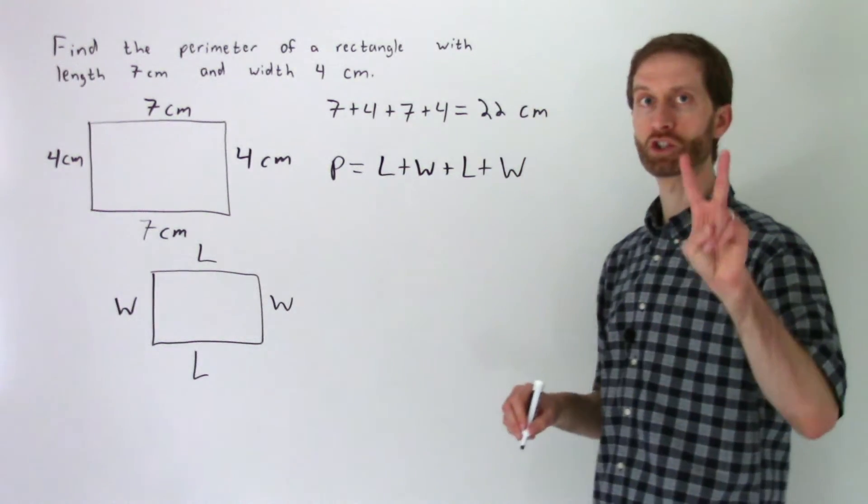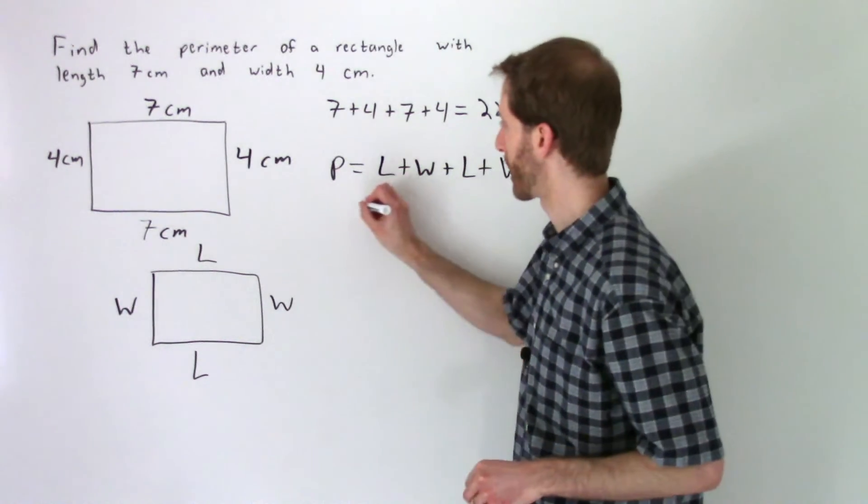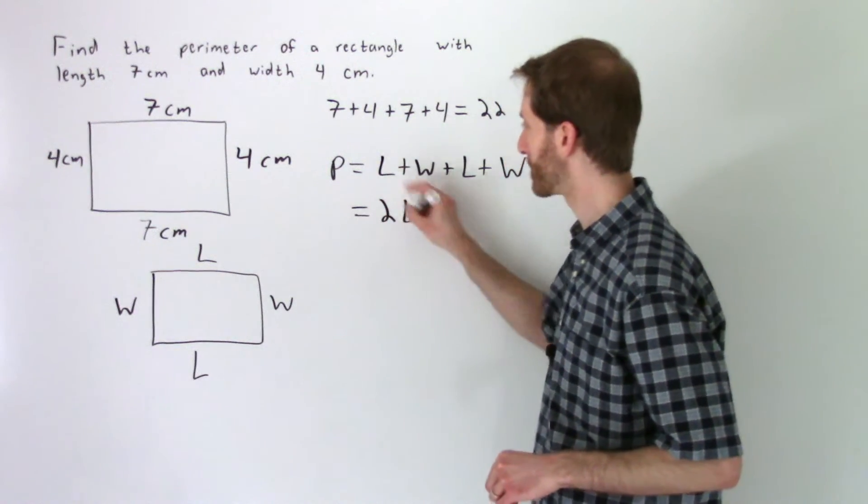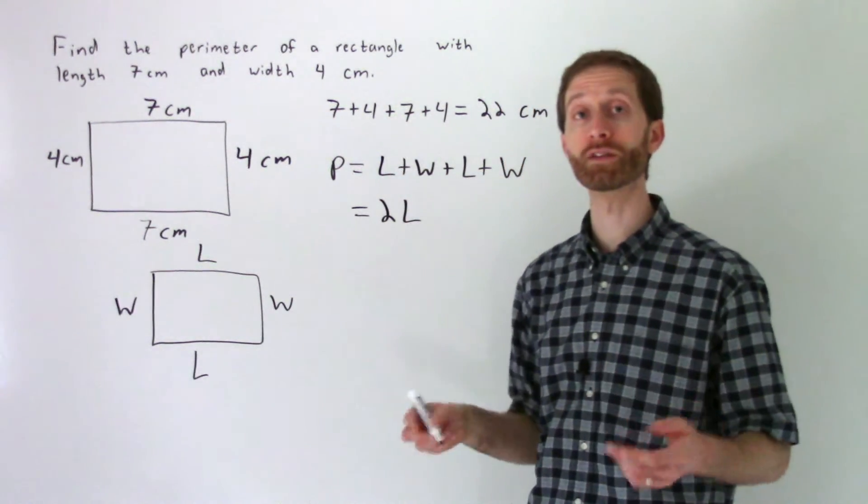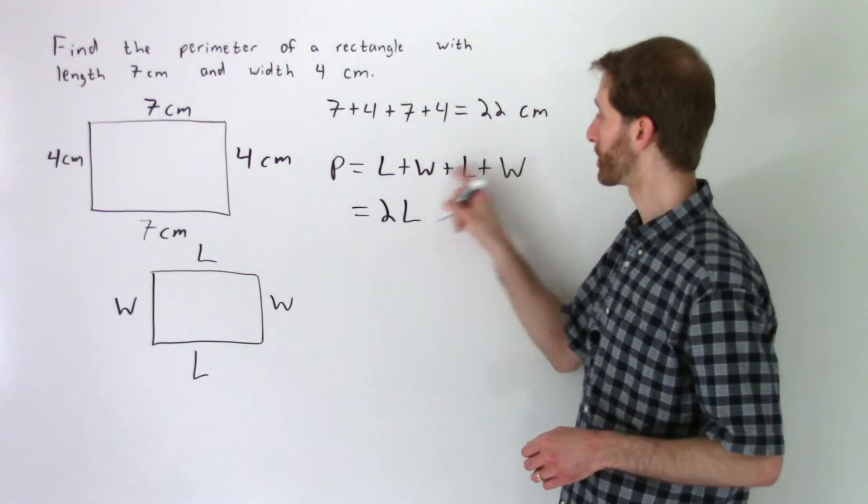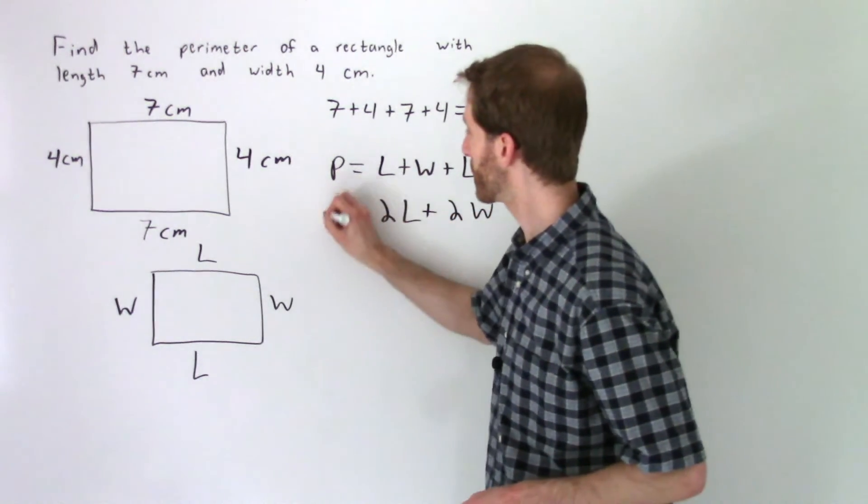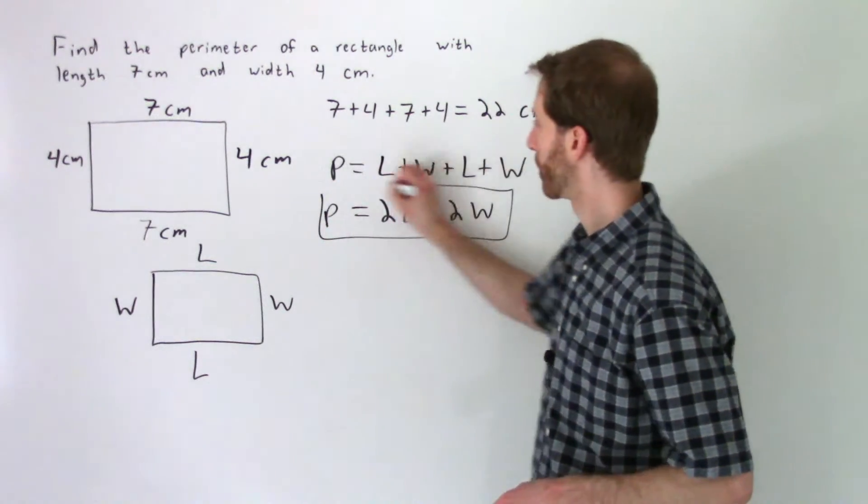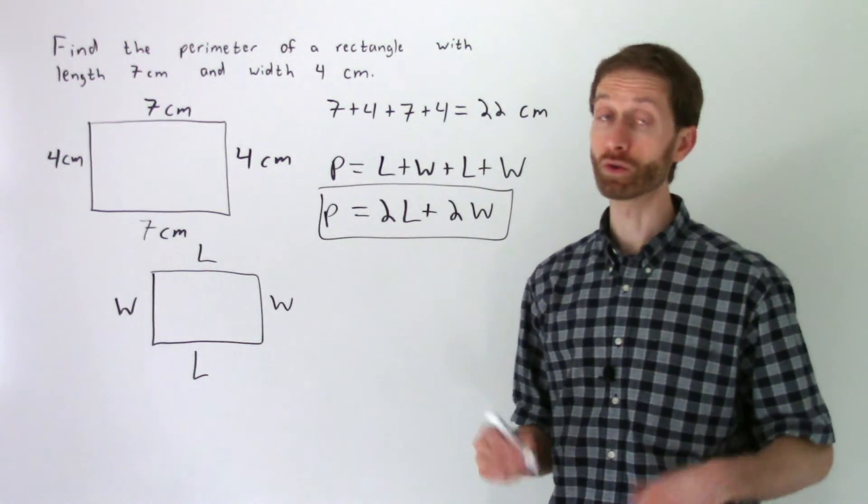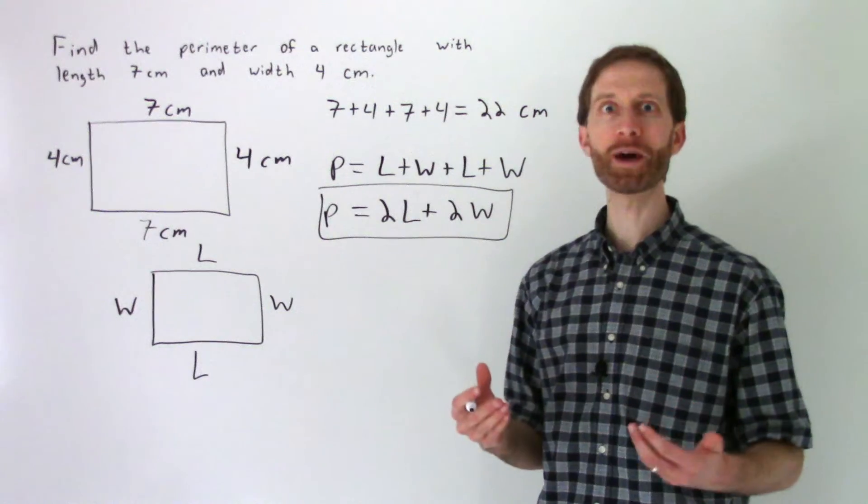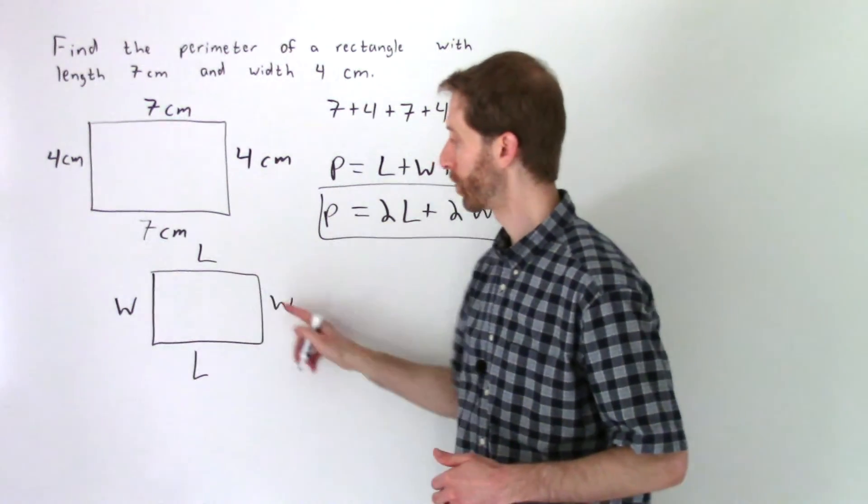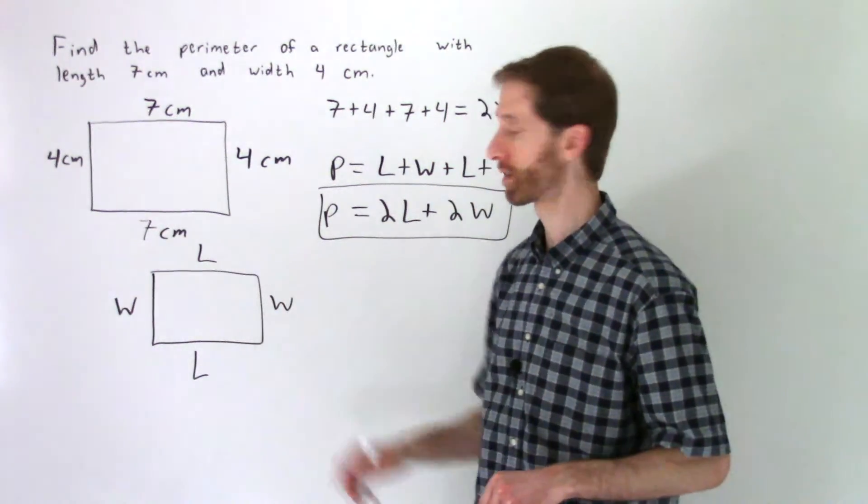Now we see that we have two lengths being added together. So two times L is happening there, or you could think of it as adding like terms. And then two widths, W plus W. And so this is the formula that we get for the perimeter of any rectangle. You could memorize it, or you could think about how it makes sense. Width, width, two W, length, length, two times length.